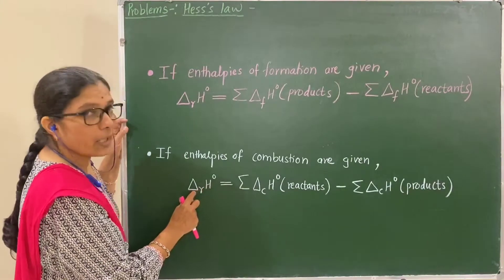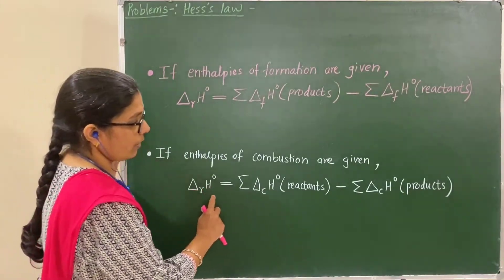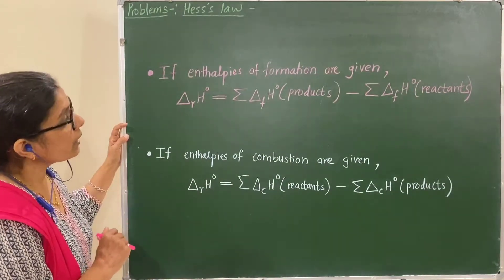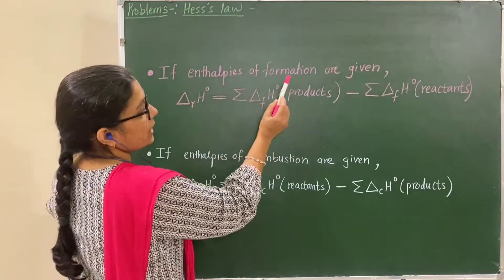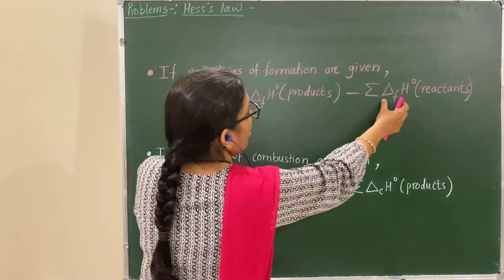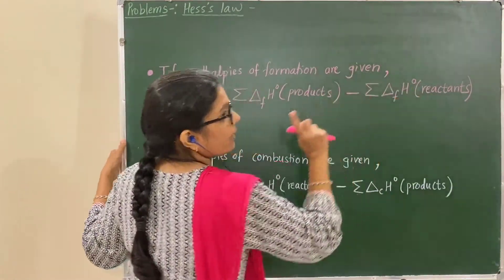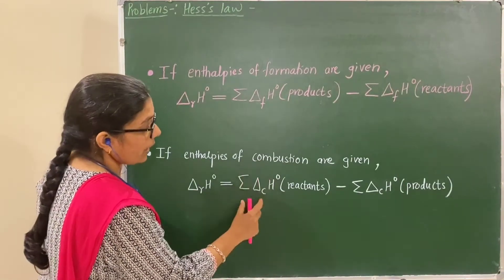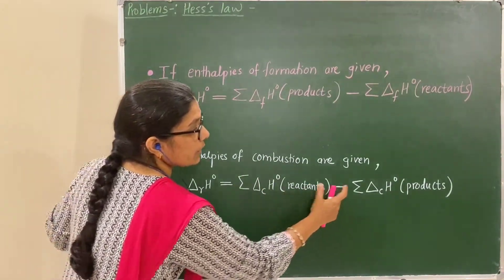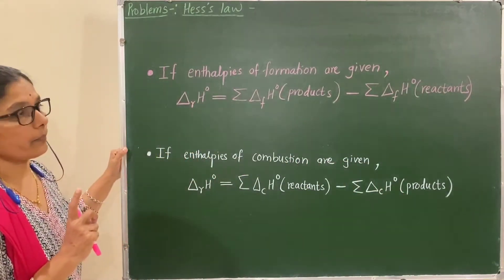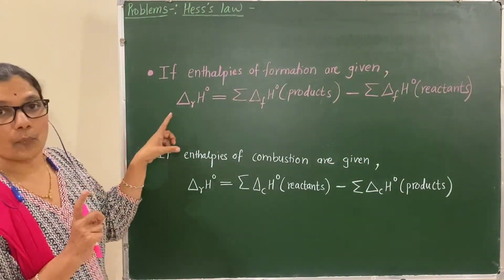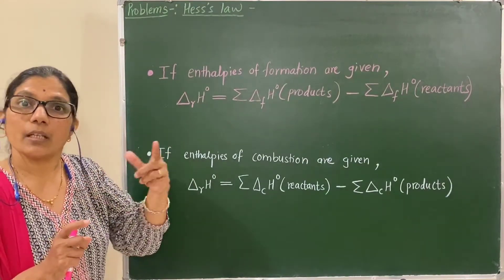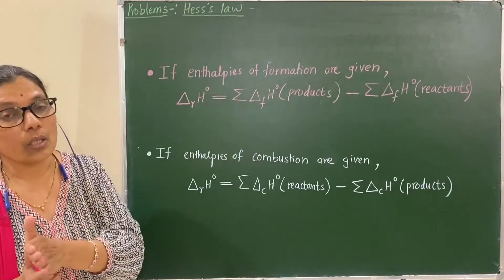Next, suppose if enthalpies of combustion of reactants and products are known, then you can determine the enthalpy of reaction by using this formula. Remember: in case of enthalpies of formation, it is products minus reactants, and in case of combustion, it is reactants minus products. Remember this.